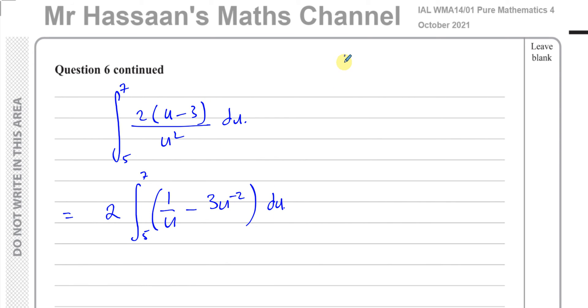I'm going to integrate that with respect to u. Just rewriting this as u/u² minus 3/u². So u/u² minus 3/u², this becomes 1/u, and this becomes 3u⁻², ready to be integrated. So now I can integrate this.